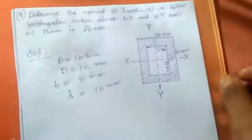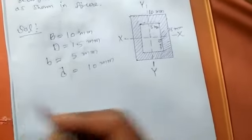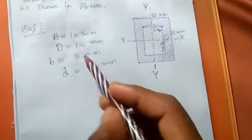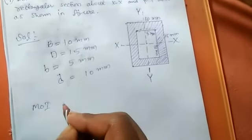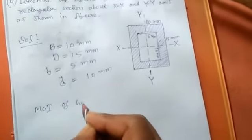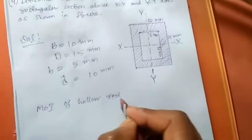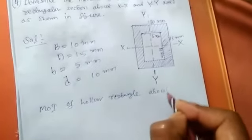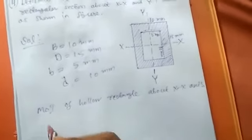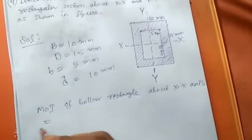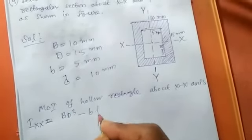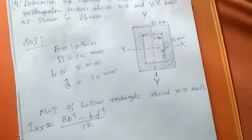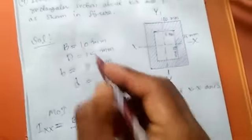Next we know the formula of moment of inertia of a hollow rectangular section. That is, moment of inertia of a hollow rectangle about X-X axis is denoted by I_xx equals BD³ minus bd³ divided by 12. Okay, so here we put this value.